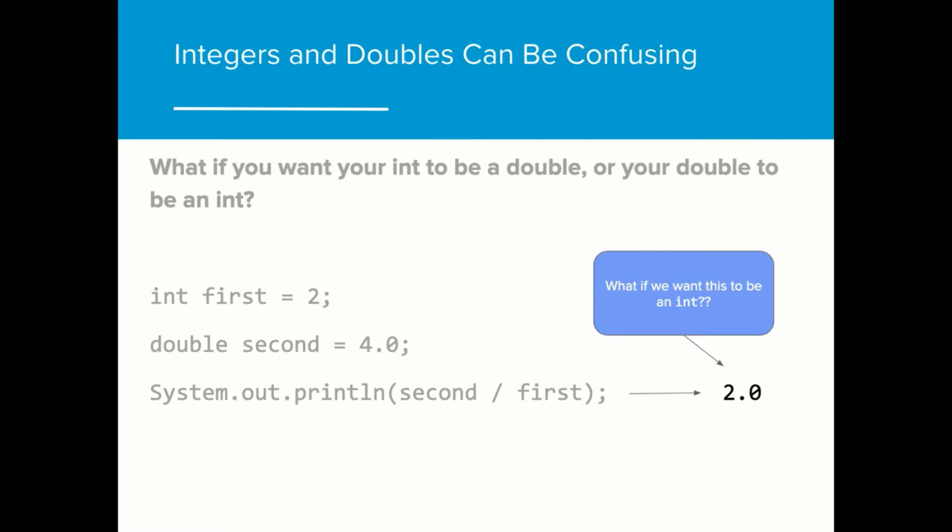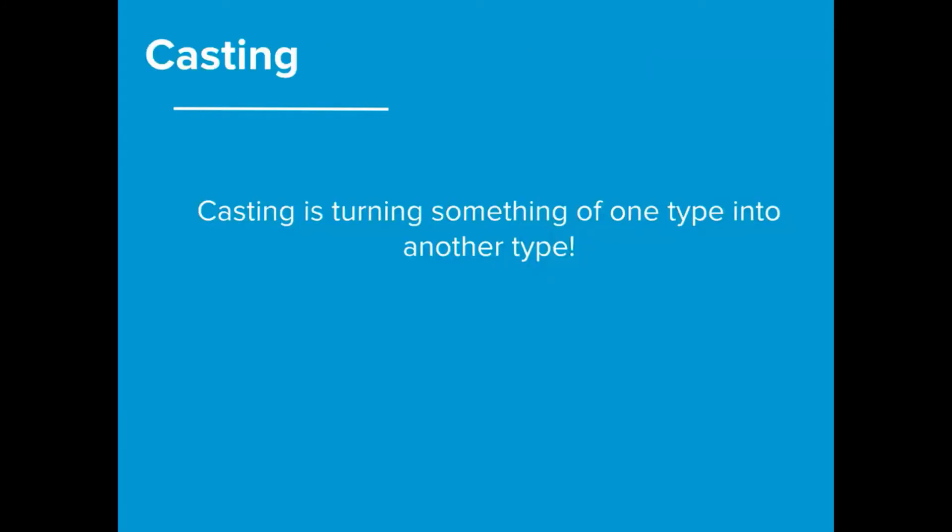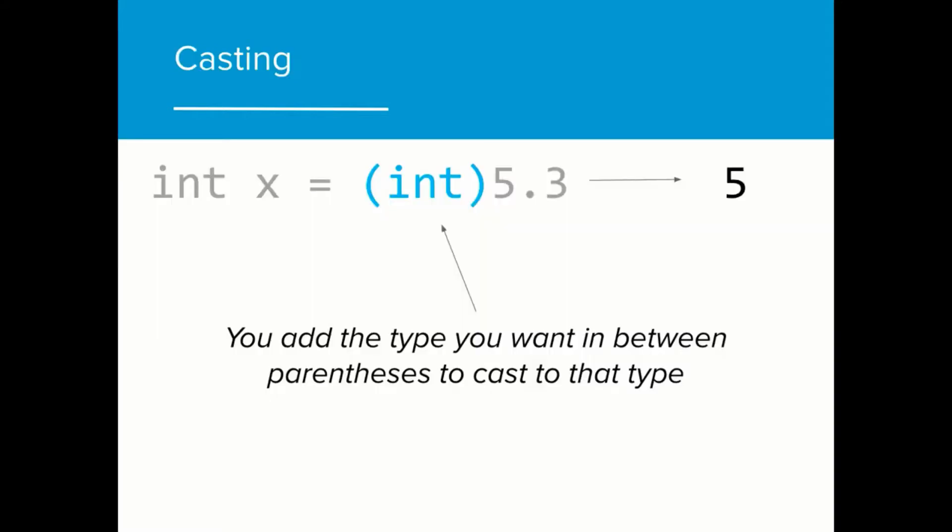But what if we want the outcome to be an int? We can actually change the data type of a value through the process of casting. Casting is turning something of one type into another type. Casting is done by adding the type that you want in between parentheses to cast to that type.